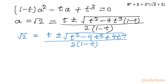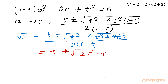Checking the radicand, it is a perfect square: (2t² - t)². We can cancel the square root and the squared term, simplifying the expression significantly. The denominator remains 2(1 - t).